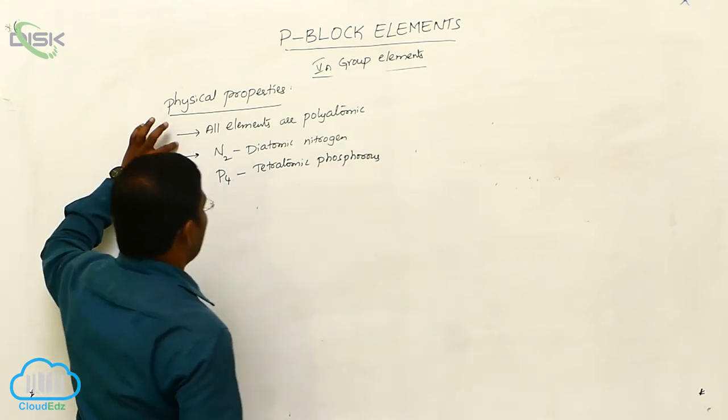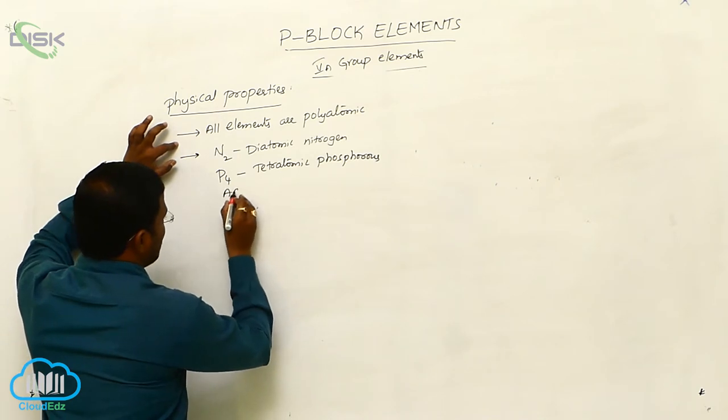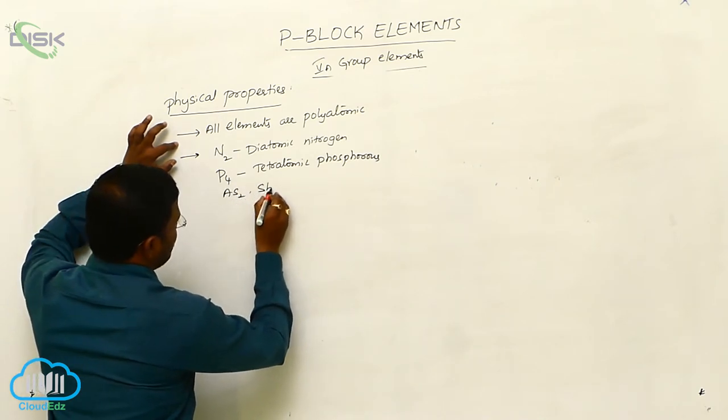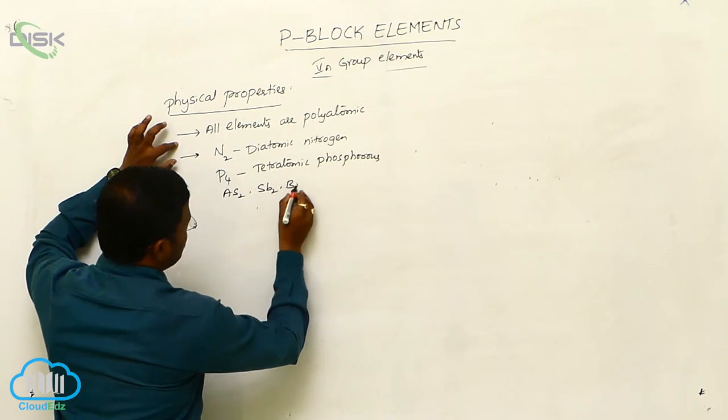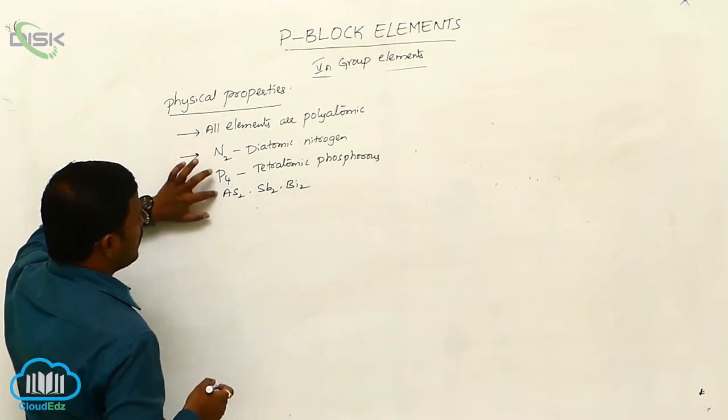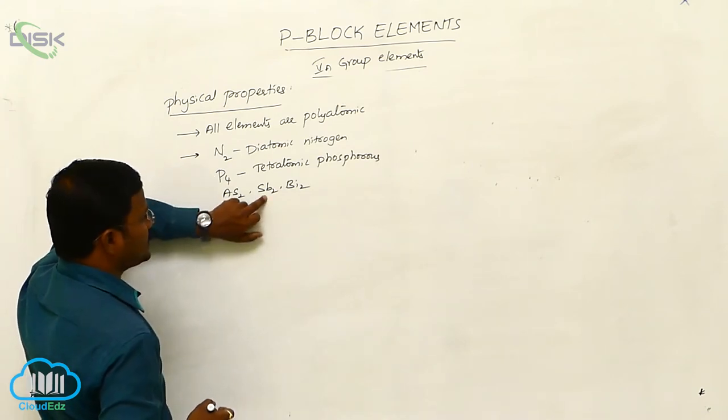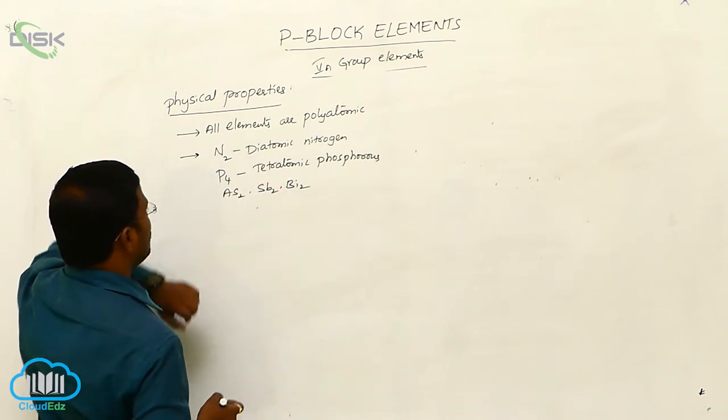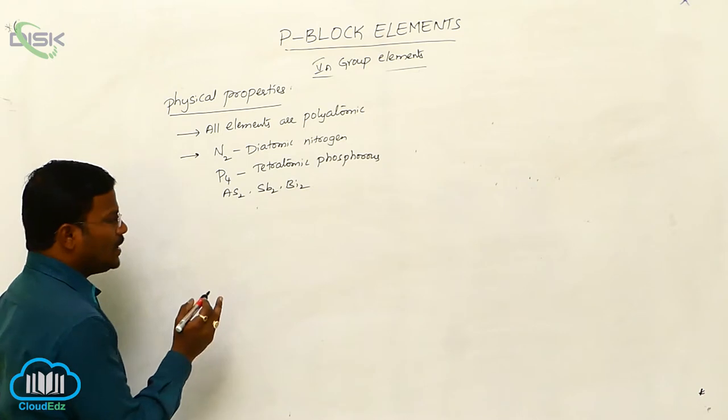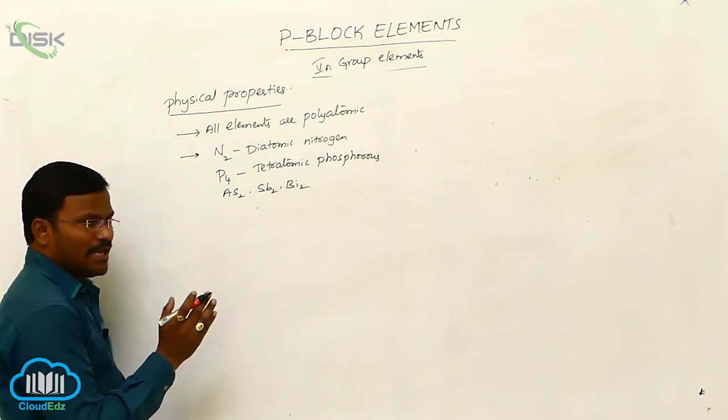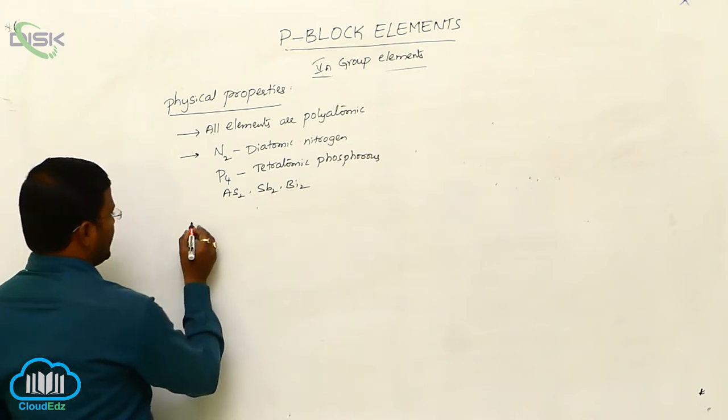The remaining elements from the same group, arsenic, stibium and bismuth, they are in molecular form. N2, P4, As2, Sb2, Bi2 are molecular forms, where N, P, As, Sb, Bi stand for atomic form. Next one.